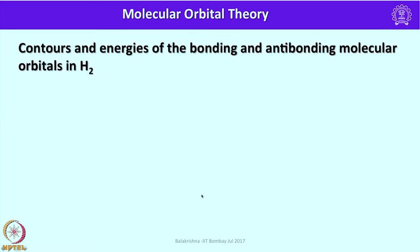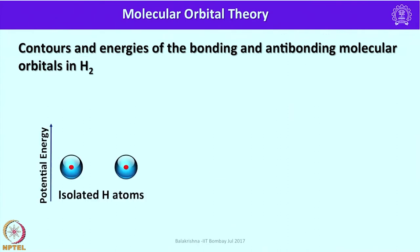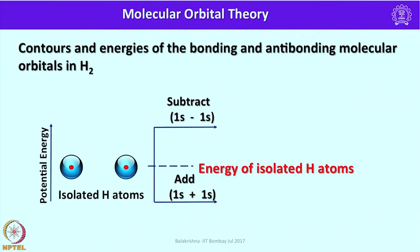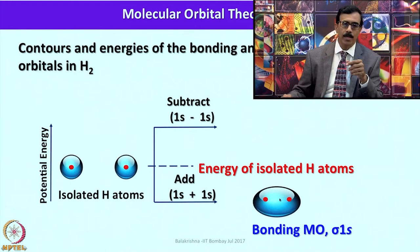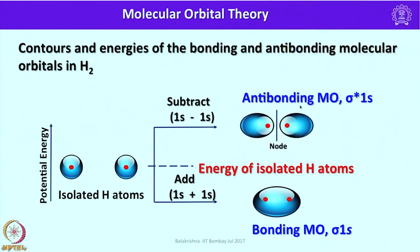Let us look into the contours and energies of the bonding and antibonding molecular orbitals of a simple diatomic molecule such as H2. We are considering the 1s orbital of the hydrogen atom — they are interacting. When the wave functions of both atoms are added, it generates a bonding molecular orbital where the electron resides between the two nuclei. When subtracted, an antibonding molecular orbital is generated where a nodal region — zero electron density — exists between the two nuclei.